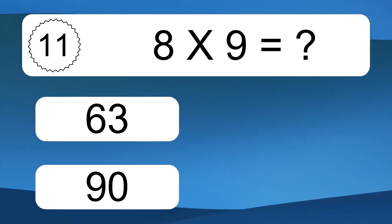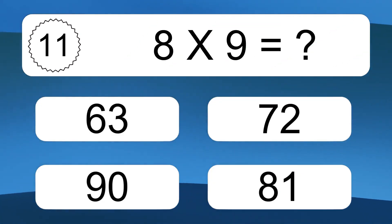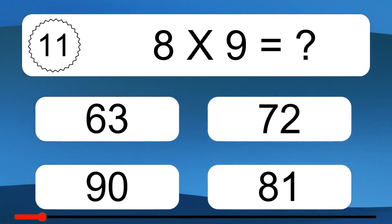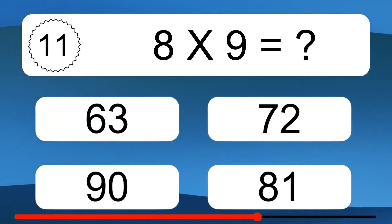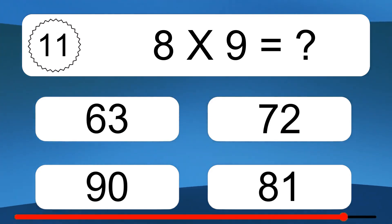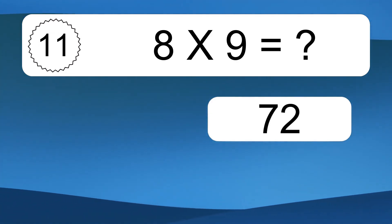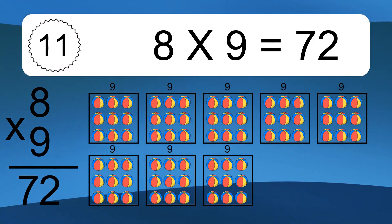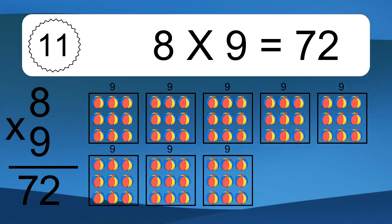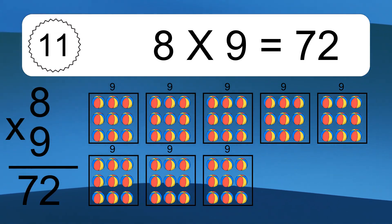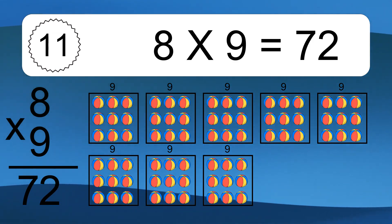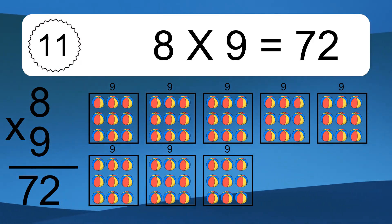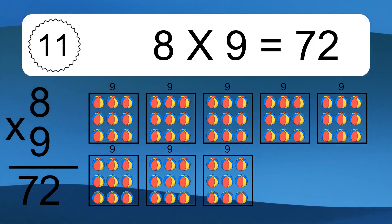8 times 9 equals what? 8 times 9 equals 72. We have 8 boxes, and each box has 9 colorful balls inside. If you count all the balls in all the boxes together, you will have 8 times 9 balls. This equals 72 balls.